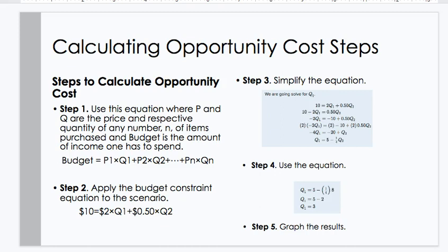Calculating opportunity costs — the steps. Step 1: use this equation where P and Q are the price and respective quantity of any number N of items purchased, and budget is the amount of income one has to spend. Your budget equals the price of the first good times the quantity of the first good consumed, plus the price of the second good times the quantity of the second good consumed, and so on up to the Nth price of the Nth good.